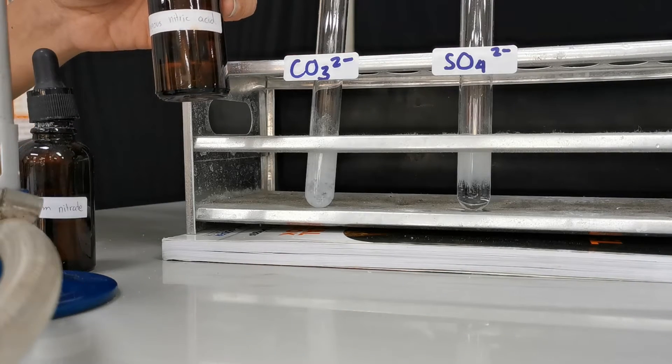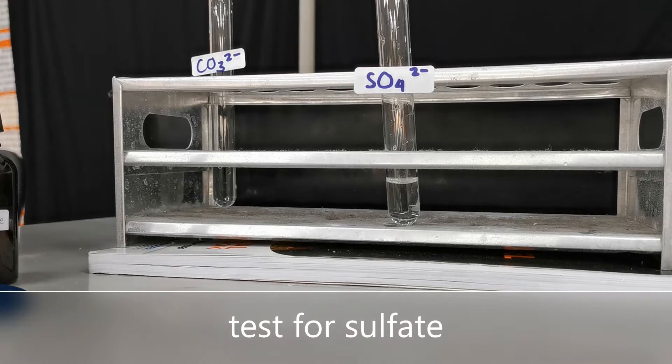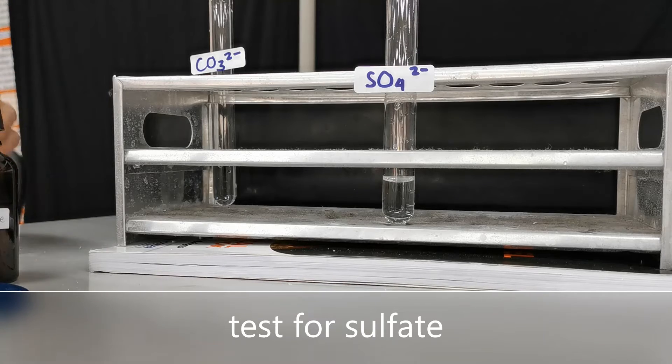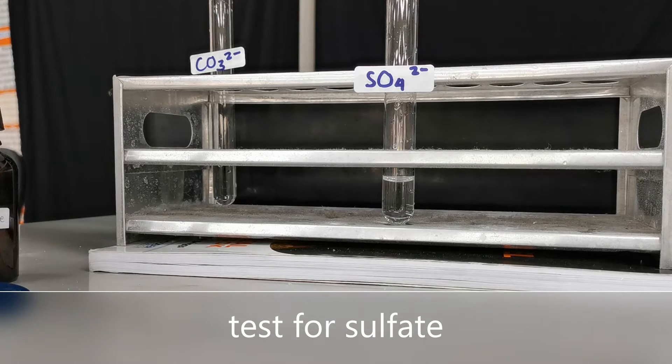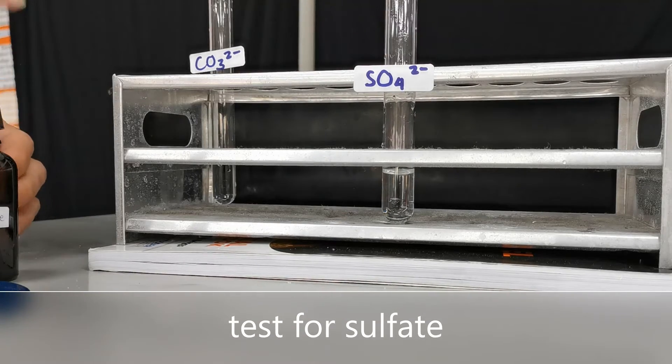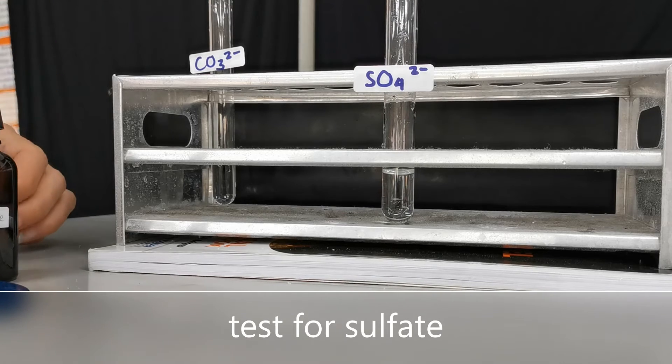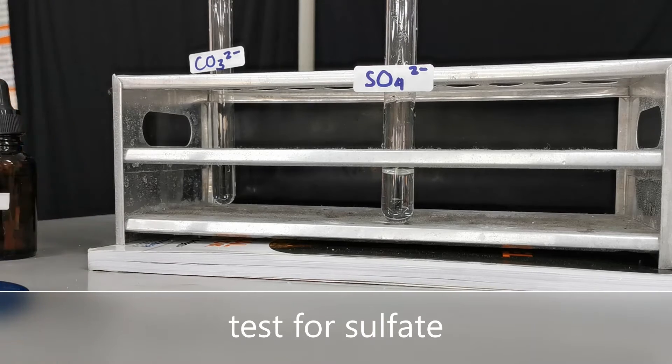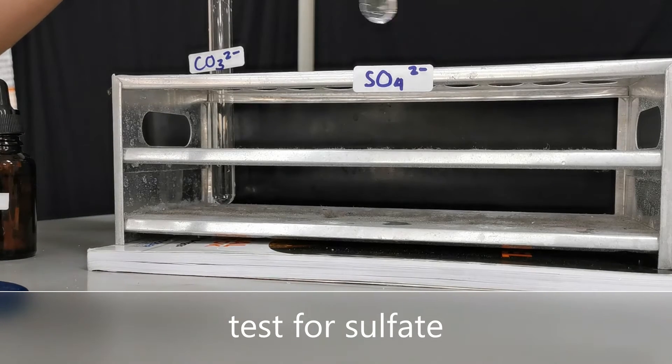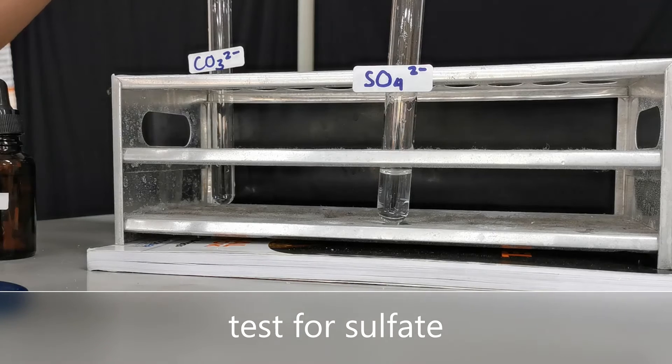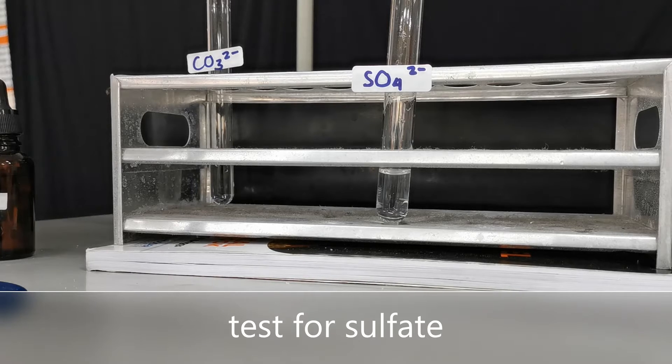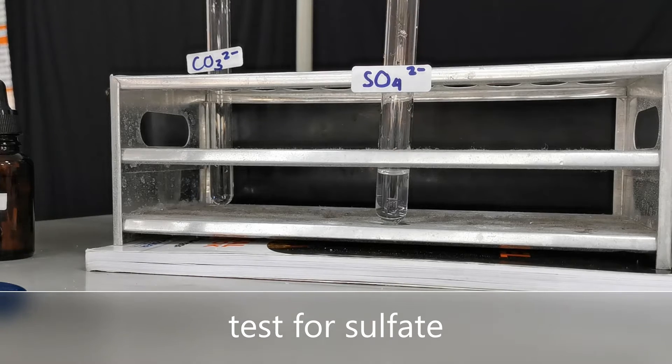To make sure there is no carbonate in our solution, we add nitric acid to eliminate any carbonate. Whatever ion remains will not contain carbonates, because carbonate reacts with acid to give carbon dioxide. After that, we add barium nitrate. So any white precipitate formed after the addition of acid, we will know it comes from sulfate ion.